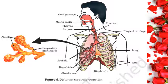Within the lungs, the passage divides into smaller and smaller tubes and finally terminates in balloon-like structures called alveoli. The alveoli provide a surface where the exchange of gases can take place. The walls of the alveoli contain an extensive network of blood vessels. When we breathe in, we lift our ribs and flatten our diaphragm and the chest cavity becomes larger. Because of this, air is drawn into the lungs and fills the expanded alveoli. The blood brings carbon dioxide from the rest of the body for release into the alveoli, and oxygen in the alveoli is taken up by the blood.